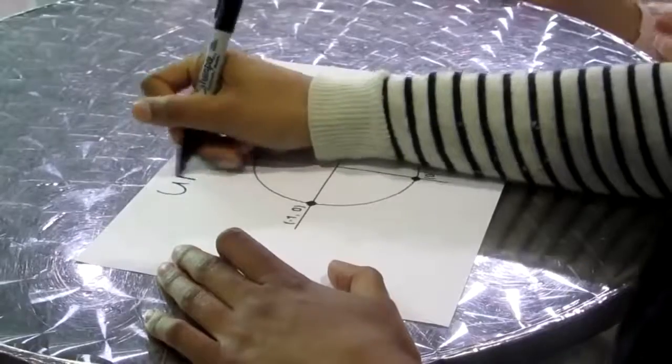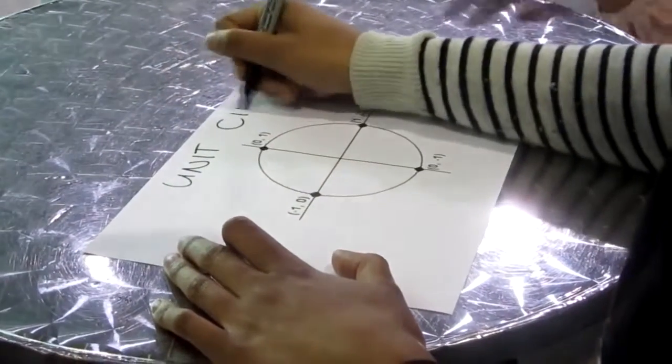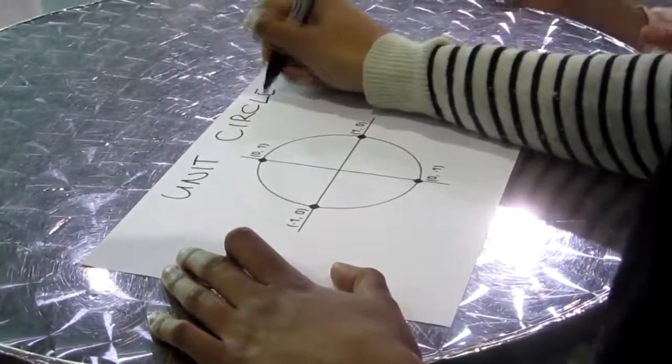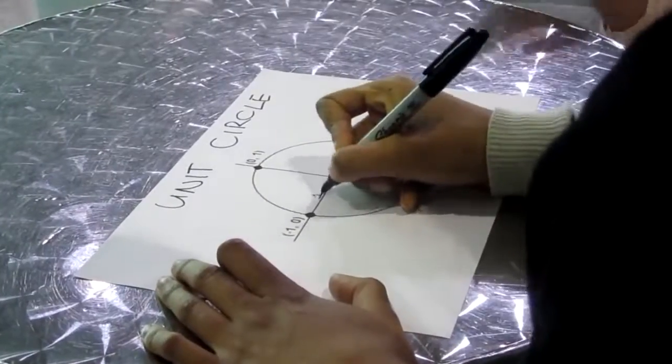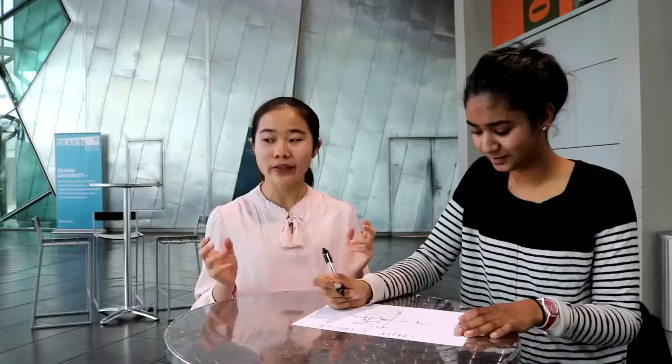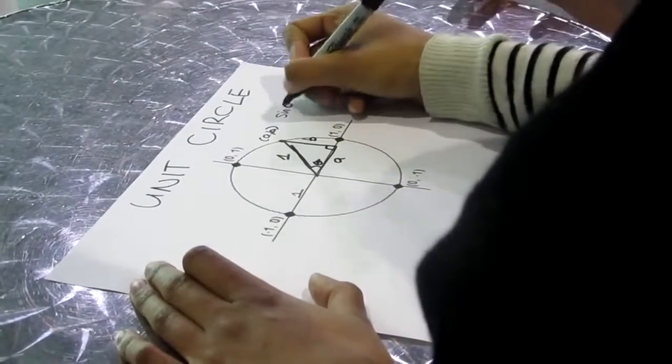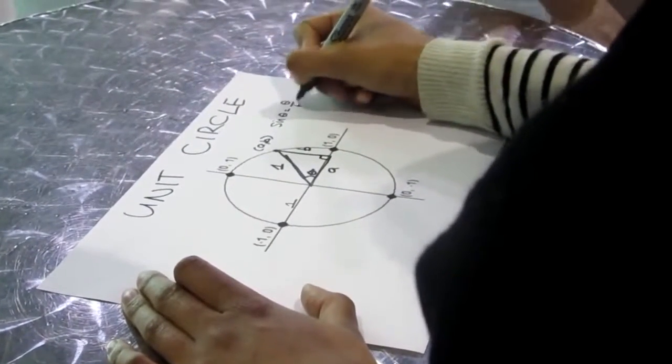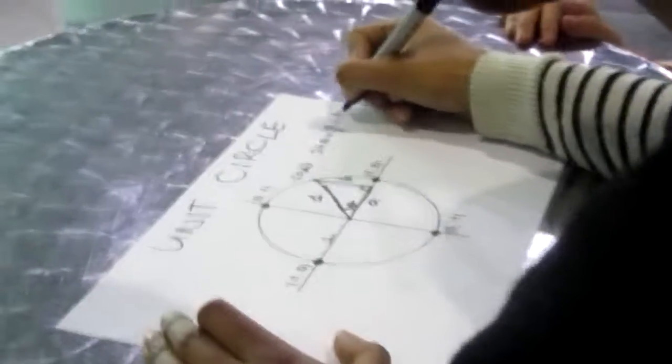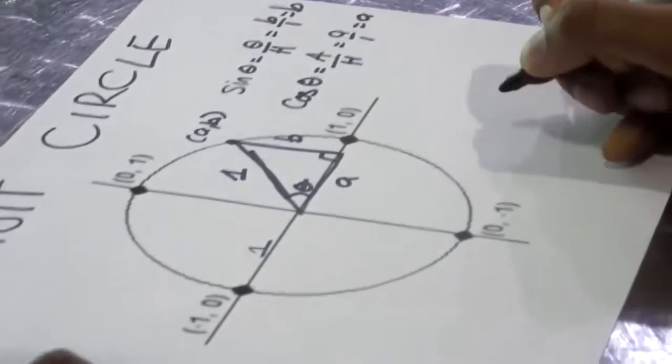If we take this triangle, we can use it to describe the positions of a point on what we call the unit circle. This is a circle placed on the Cartesian plane so that the radius is equal to one. The height of this point will be equal to the sine of the angle, since the radius or the hypotenuse is one. The same principle applies for the horizontal position of the point, which is equal to cos of the angle. These principles work for any angle on the circle due to the different laws of symmetry.